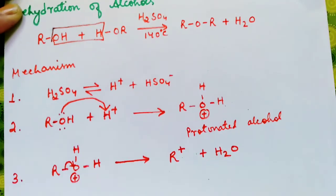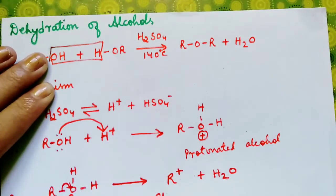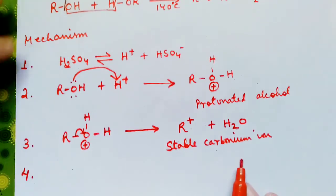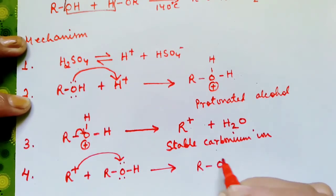In the fourth step, this stable carbonium ion reacts with another molecule of alcohol. R plus with R-O-H. And so we have R-O-H, and here we have plus.